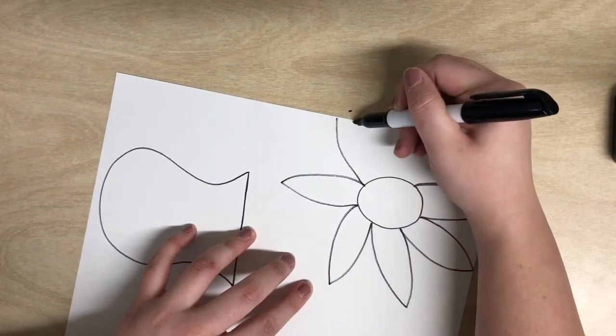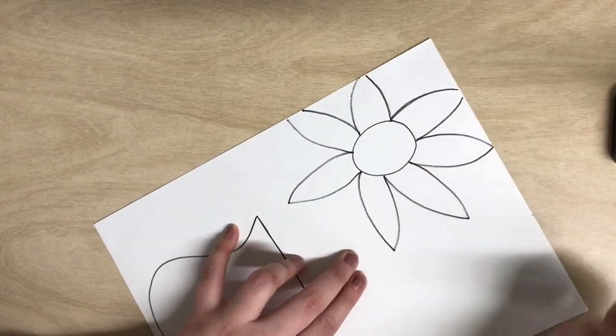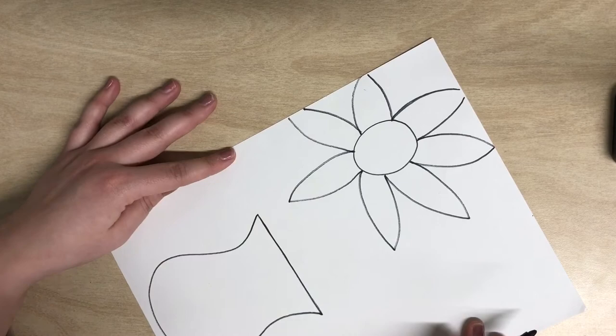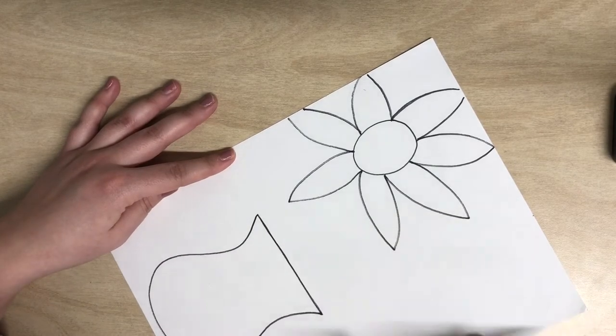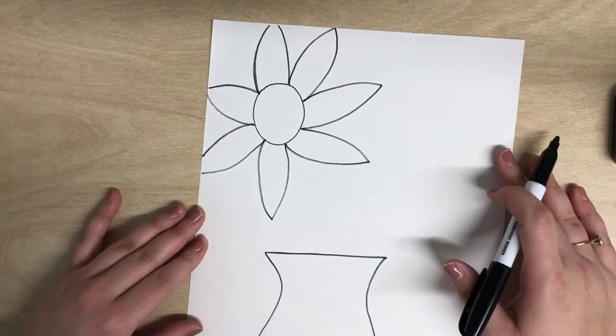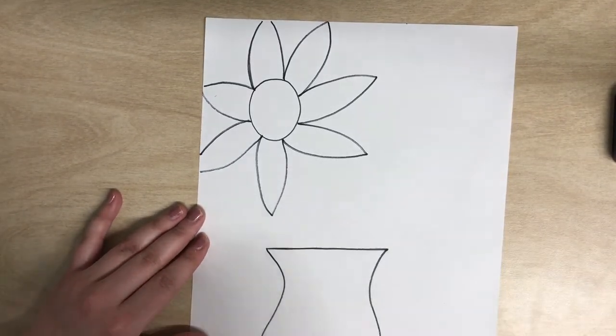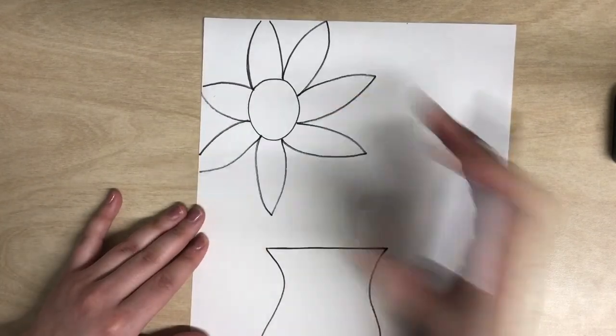You'll notice in Vincent van Gogh's work that not all of his flowers or petals were the same size because that's not how sunflowers look in real life. So it is absolutely okay if they're not all the same size or if you make a mistake—it is no big deal.